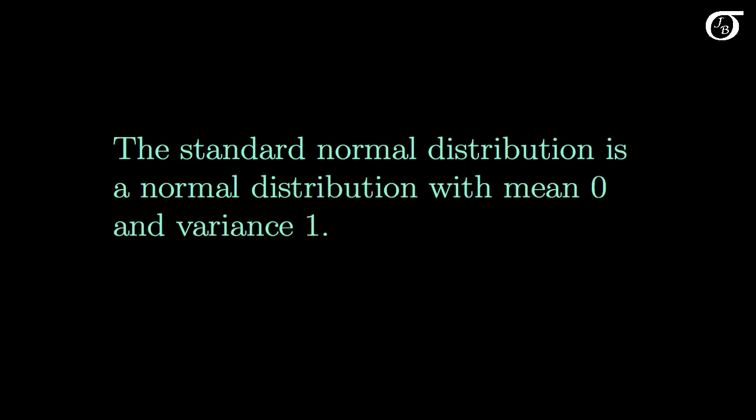By definition, the standard normal distribution is a normal distribution with a mean of 0 and a variance of 1. We often represent random variables that have the standard normal distribution with the letter Z. And yes, I am Canadian. And this we might say if Z has a standard normal distribution, we might write this as Z is distributed normally with a mean of 0 and a variance of 1, that being mu, that being sigma squared. And if the variance is 1, of course sigma is 1 as well.